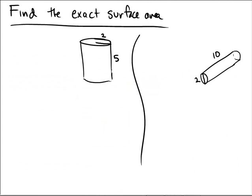Here we need to find the exact surface area of cylinders. The equation for the surface area of a cylinder is 2πrh, which accounts for the lateral area along the sides, plus 2πr² for the two circles on the top and the bottom.